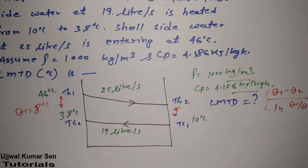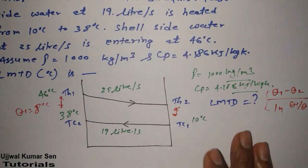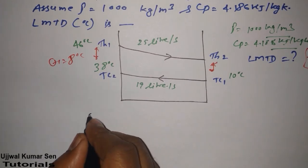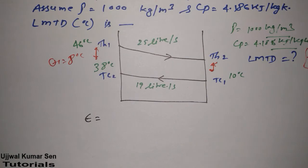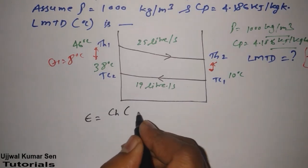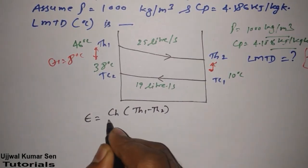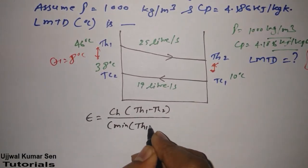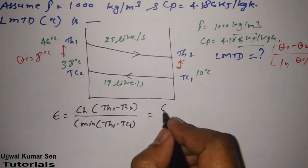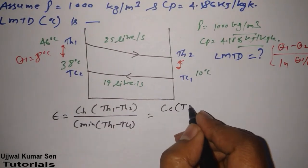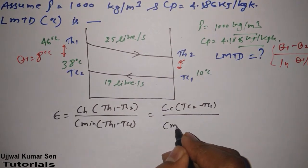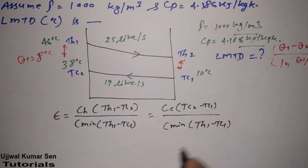So for that we are having a good relationship. What's that? The effectiveness of heat exchanger which is denoted by epsilon. Effectiveness of heat exchanger is equal to CH times TH1 minus TH2 divided by C minimum times TH1 minus TC1, which is equal to CC times TC2 minus TC1 divided by C minimum times TH1 minus TC1.